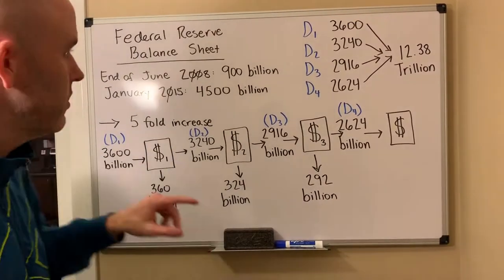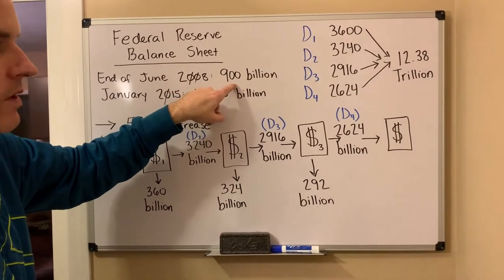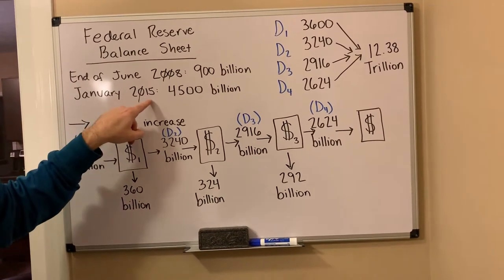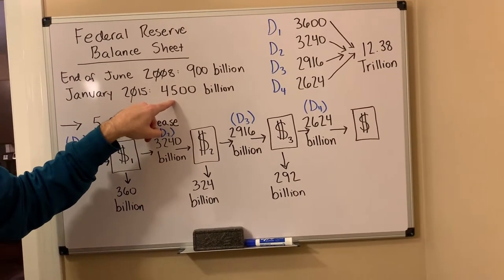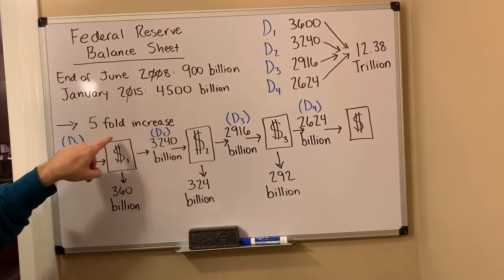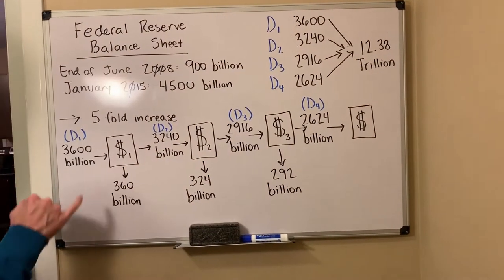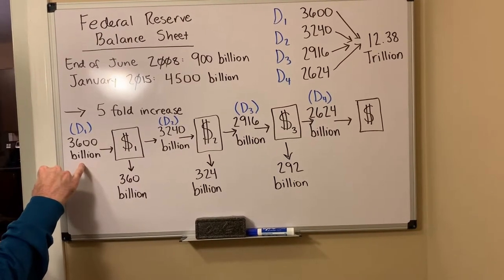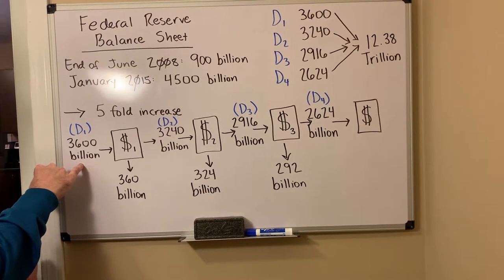So in June of 2008, the Fed's balance sheet eclipsed $900 billion. And by January of 2015, their balance sheet sat at $4,500 billion, or $4.5 trillion — a five-fold increase. Basically, $3.6 trillion, or $3,600 billion, was created out of thin air.